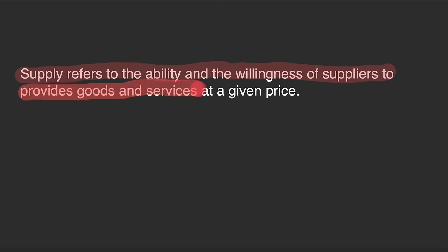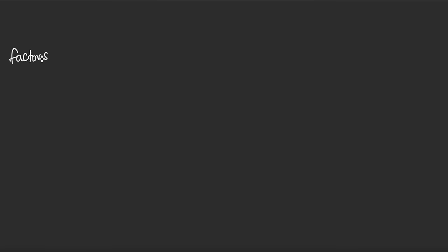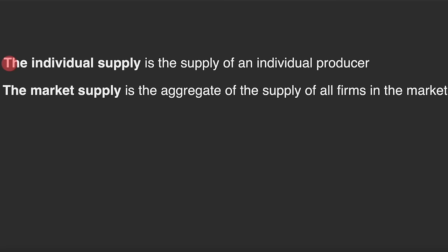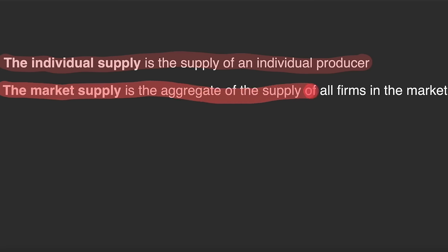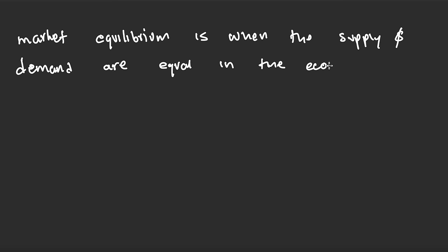Supply refers to the ability and willingness of suppliers to provide goods and services at a given price. The higher the price of the good, the higher the quantity supplied. Factors that affect supply include cost of factors of production, prices of other goods, global factors, technology advances, and business optimism. Individual supply is the supply of one producer; market supply is the aggregate of supply of all firms in the market. Market equilibrium is when supply and demand are equal.